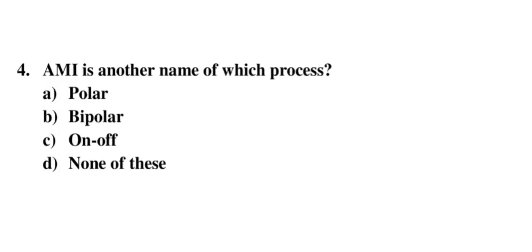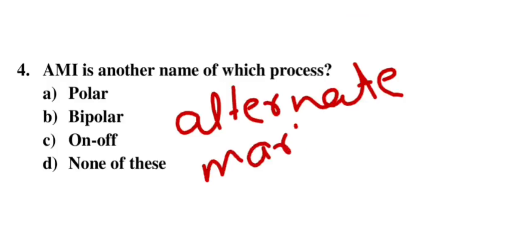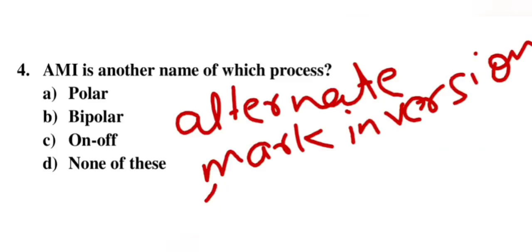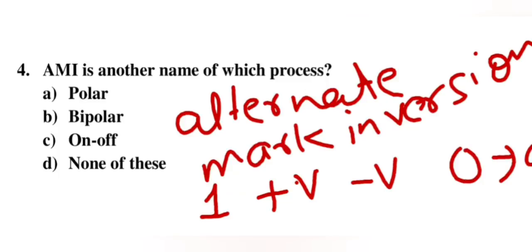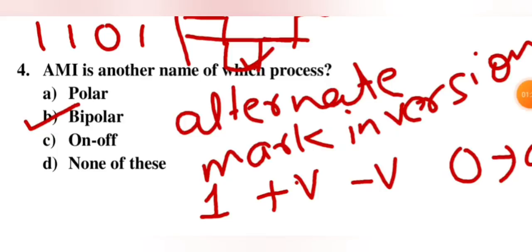AMI is another name for which process? AMI stands for Alternate Mark Inversion. In AMI, binary 1 is represented alternatively by plus V or minus V, and zero is represented by zero voltage. For example, if we have 1 1 1 0 1 — the first 1 is positive, the second 1 is negative, zero stays at DC level, and the next 1 is positive again. This is called bipolar coding, so B is correct.